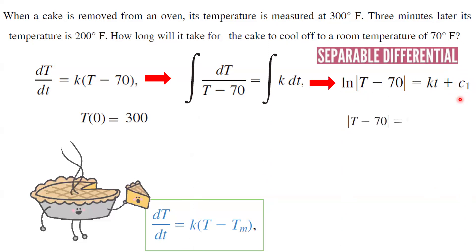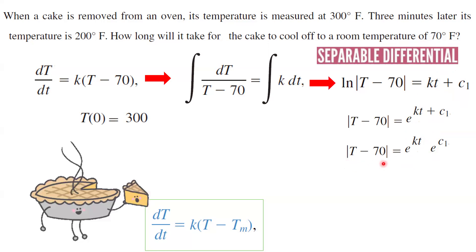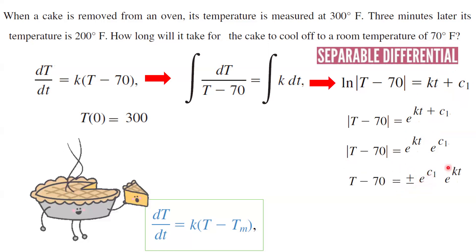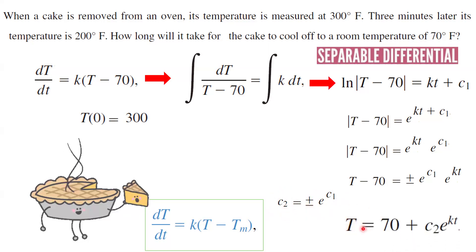Based on the definition of ln, the absolute value of T minus 70 can be written as e to the power of Kt plus C1. Since we have addition between exponents, we can separate them: the absolute value of T minus 70 equals e to the power of Kt times e to the power of C1. Getting rid of the absolute value sign, T minus 70 becomes plus or minus e to the power of C1 times e to the power of Kt. We combine the constants and call it C2, where C2 is plus or minus e to the power of C1. So our mathematical model is T equals 70 plus C2 e to the power of Kt.